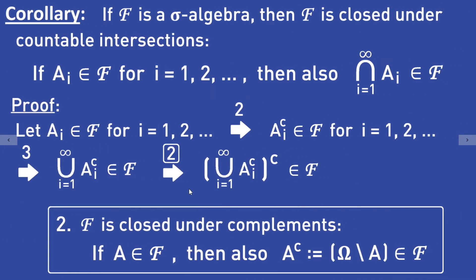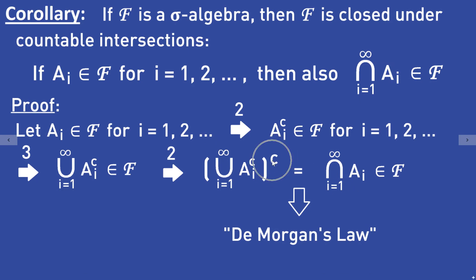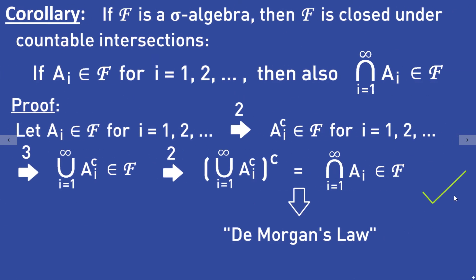Now we use property 2 again and get that the complement of this union is an element of F. But the complement of this union is equal to the intersection of the sets Aᵢ, and this is an element of F. Here we have used De Morgan's law. We have shown that the sigma algebra F is closed under countable intersections.